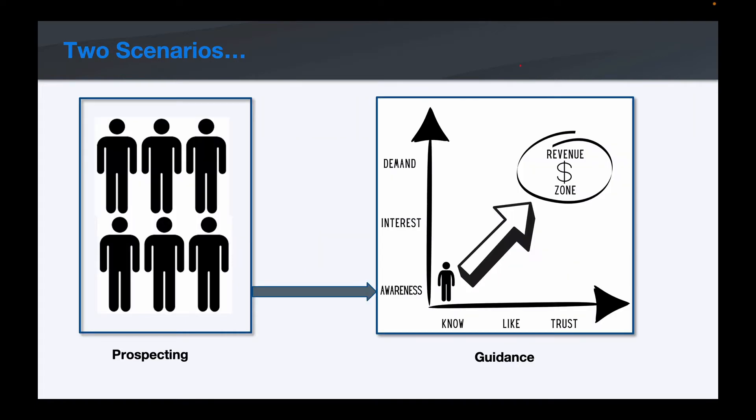There are two scenarios we want to look at as they relate to the revenue zone. The first is prospecting — how we use marketing automation to get prospects into the revenue zone, starting in that lower left-hand corner with awareness. And then secondly, once they're in the revenue zone, how do we use marketing automation to guide them more efficiently into that revenue zone. We're going to start with prospecting.